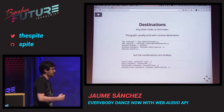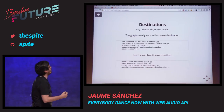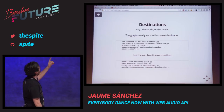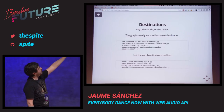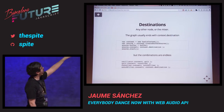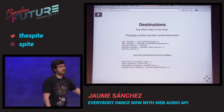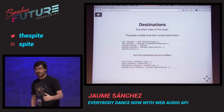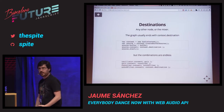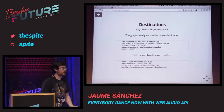But the combinations are endless. Once you've got nodes, you can start connecting them. Here's an example where you get an oscillator connected to a gain node, the gain node is connected to a convolver node, the convolver node is connected to a notch filter, and the notch filter finally goes to the destination. And this is dynamic — you can change it at any time, create dynamic effects whatever you want.